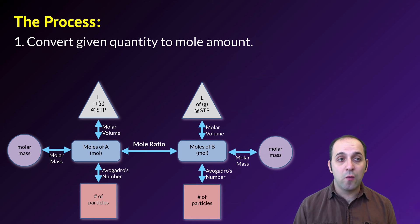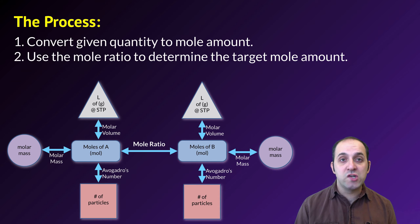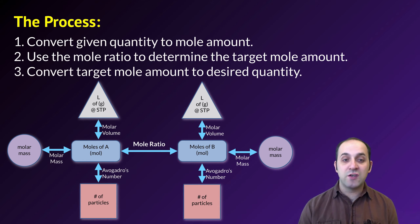Here's the process that we're going to follow. You're going to convert the given quantity to a mole amount. You're then going to use the mole ratio to determine the target mole amount that you're looking for. And then you can convert that target mole amount to the desired quantity.